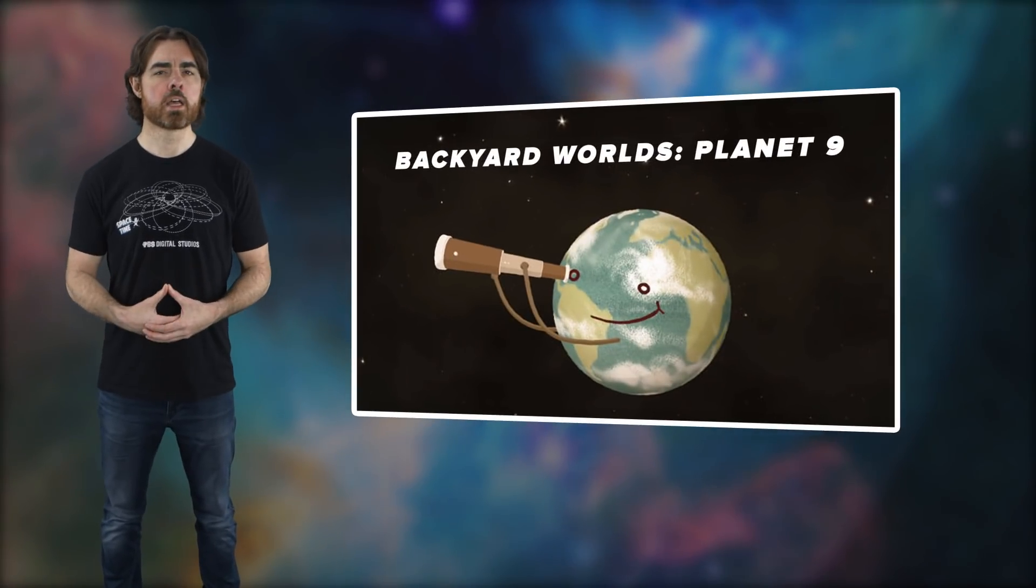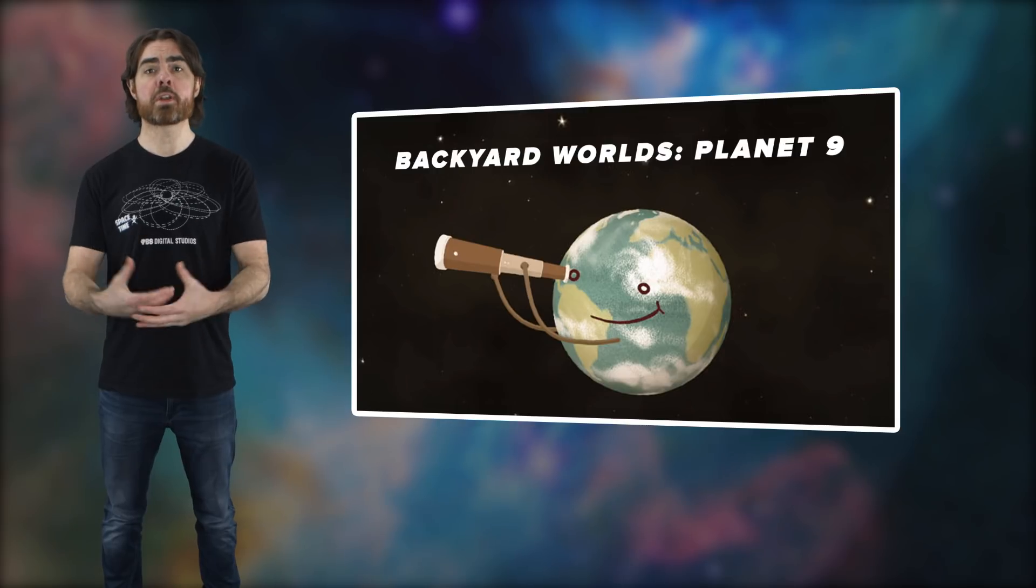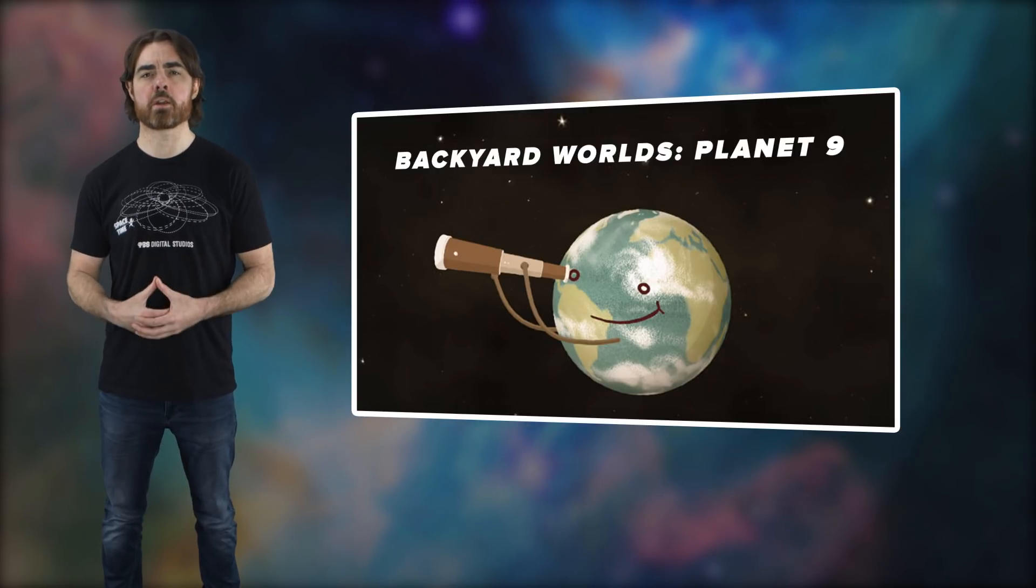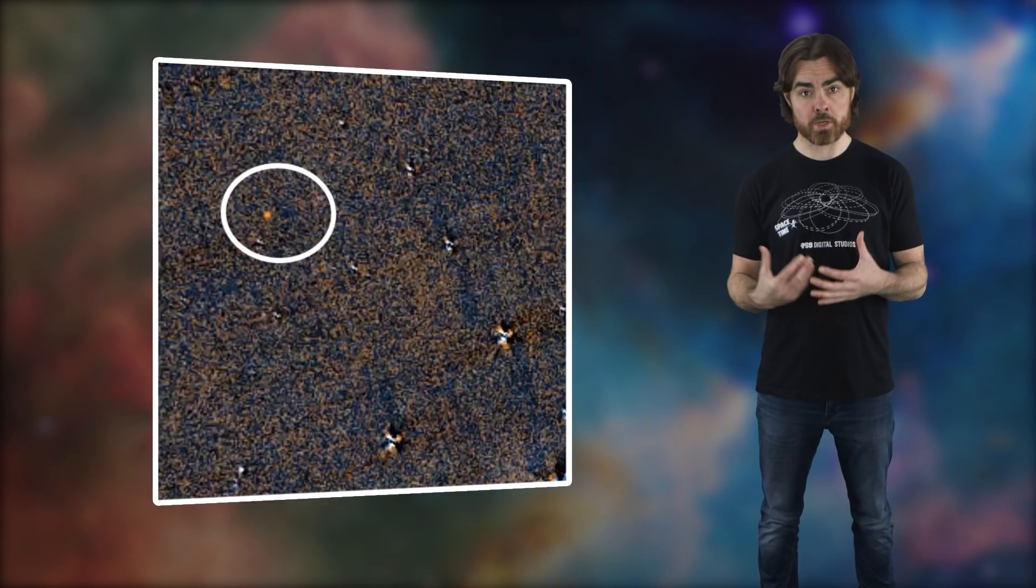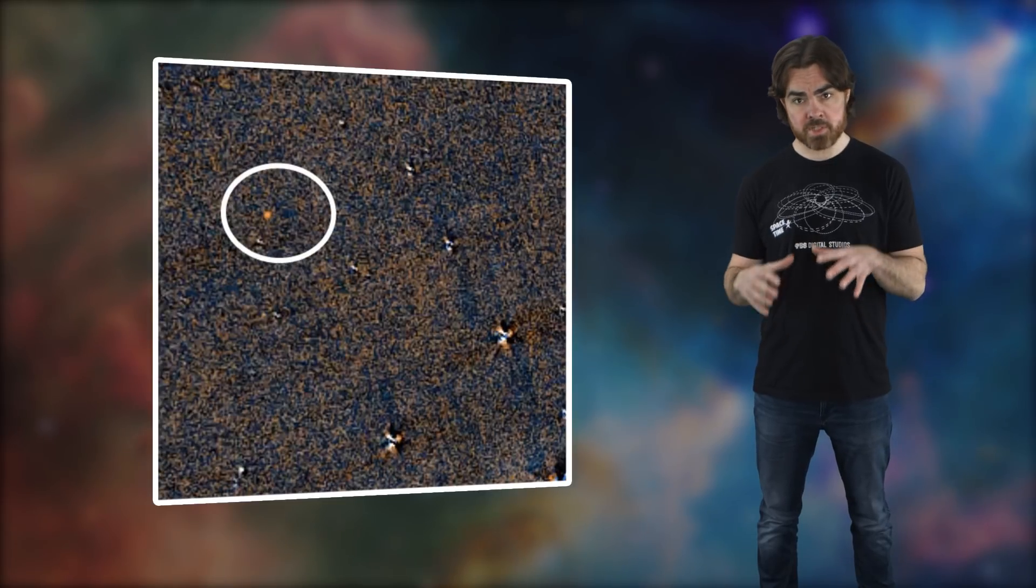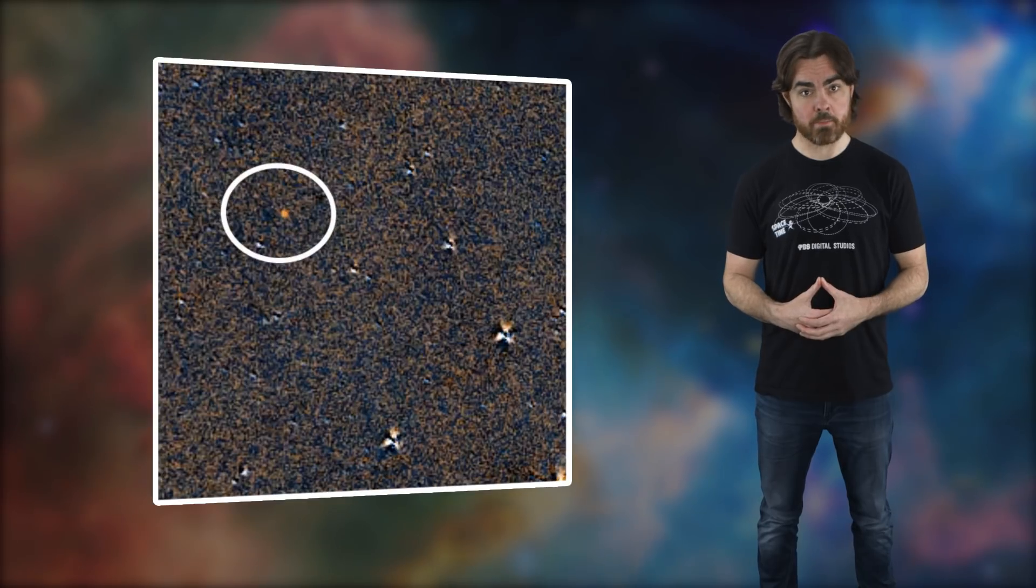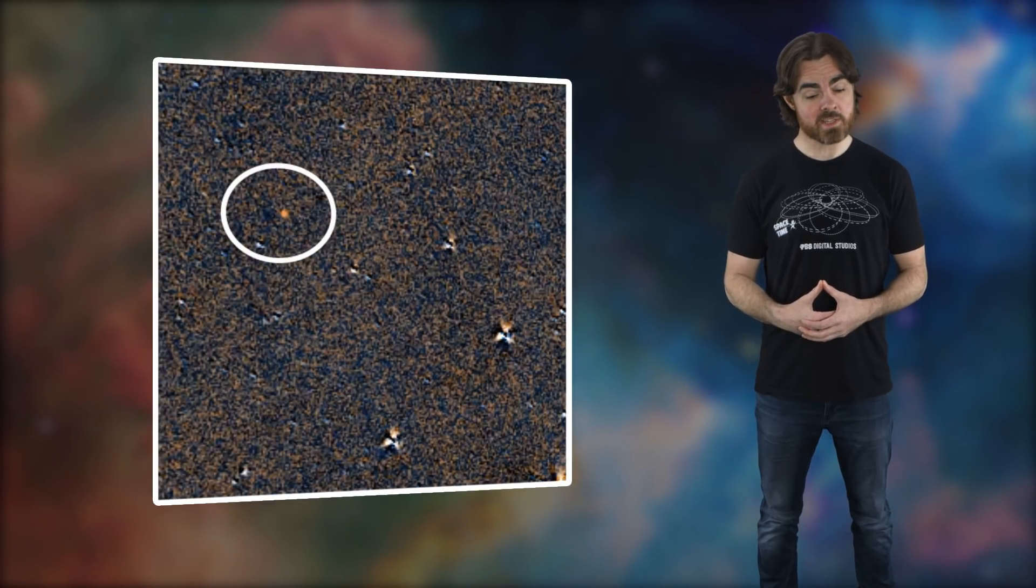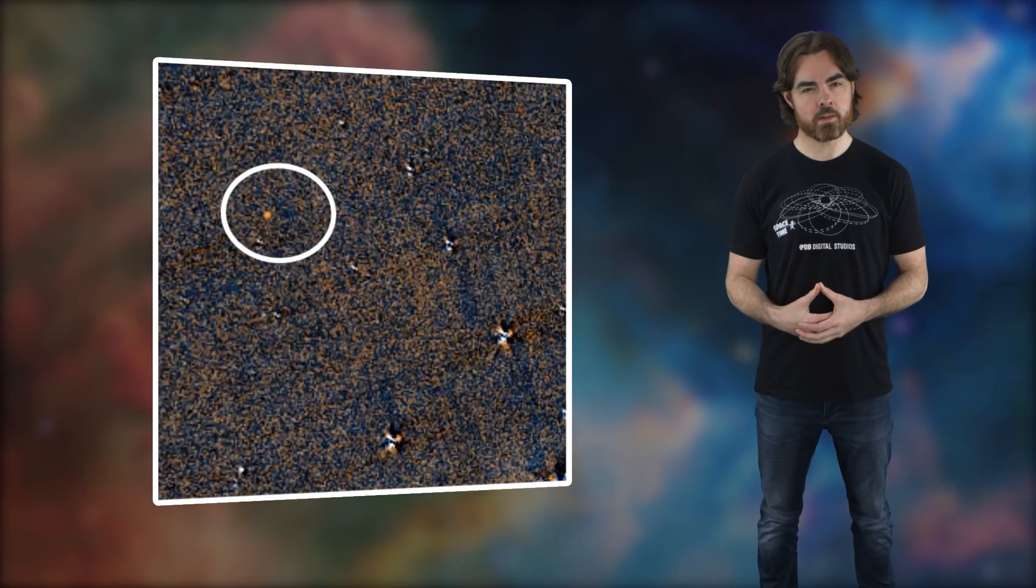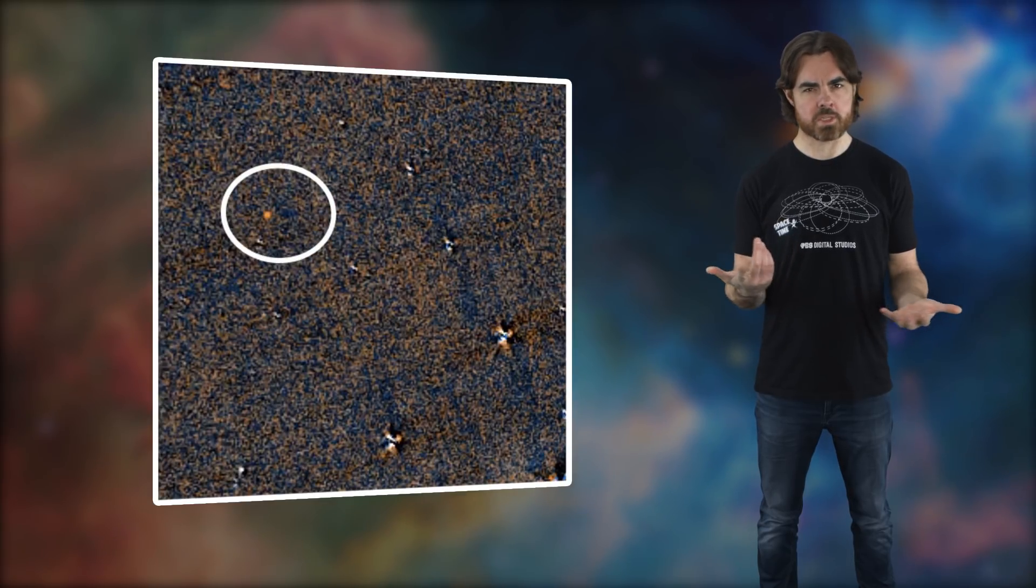The newest Zooniverse project is called Backyard Worlds Planet Nine. Its goal is to search beyond Neptune for the potential ninth planet, as well as looking for brown dwarfs, cool, faint, failed stars that live right now in your backyard. The project has located nearby brown dwarfs, but citizens are still searching for planet nine. Maybe you'll be the one to spot it.